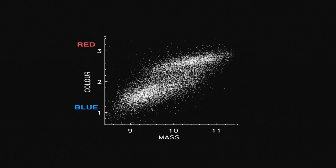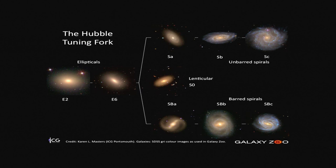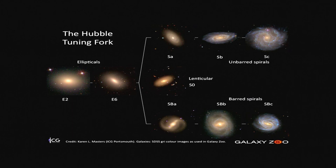Let's look at a third property: the shape of galaxies. The variety of galaxies was first put into a framework by Edwin Hubble in 1926 — just a few years after the discovery of galaxies as external worlds to our own Milky Way. There are two main classes: on the left, elliptical galaxies — massive, reddish, and featureless; on the right, spiral galaxies with spiral arms. This is much more than just a classification scheme, because the formation mechanisms of these different types of galaxies are different.